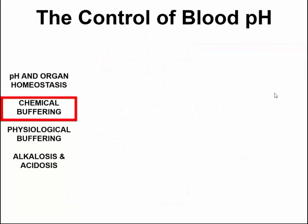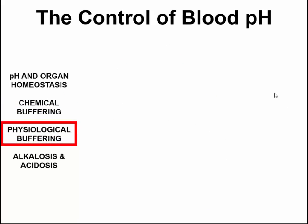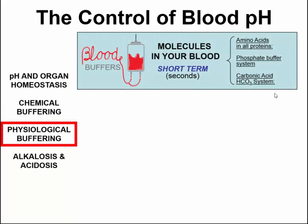So how do these three chemical buffering systems in the blood result in physiological buffering of blood pH? Well, the amino acids in all the proteins, the phosphate buffer system, and the carbonic acid buffer system can work in the short term to modulate the pH of your blood.